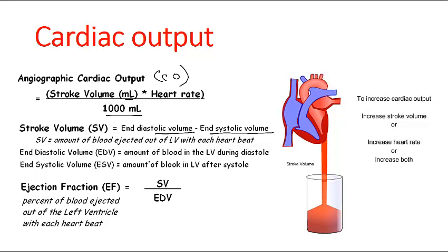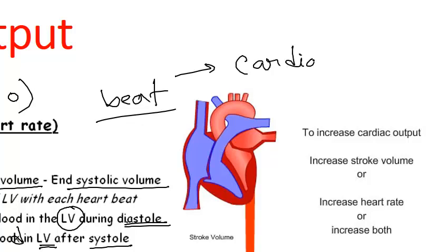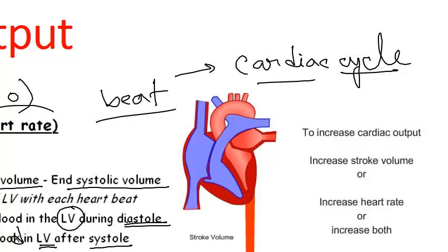End diastolic volume is the amount of blood left in the left ventricle at the end of diastole, and end systolic volume is the amount remaining after systole. The cardiac cycle — the process of the heart's compartments regularly relaxing and contracting to transfer blood — should be understood before studying cardiac output. I encourage you to watch our video on the cardiac cycle first, then you can easily calculate cardiac output using stroke volume, heart rate, and dividing by 1000 ml.